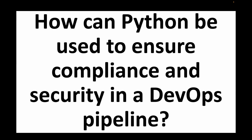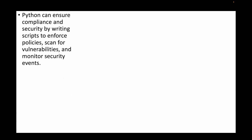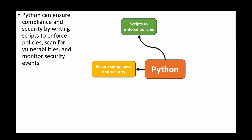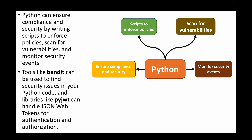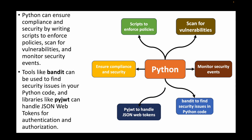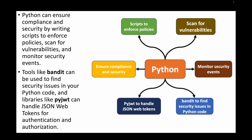The next question is: how can Python be used to ensure compliance and security in a DevOps pipeline? Python can ensure compliance and security by writing scripts that enforce policies, scan for vulnerabilities, and monitor security events. We have tools like Bandit which can find security issues in the code we have written, and libraries like PyJWT which handle JSON Web Tokens for authentication and authorization — generating tokens to authenticate to applications. This ensures that Python scripts follow security policies and do not expose any credentials.